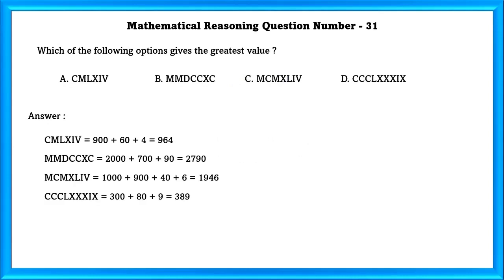Mathematical reasoning question number 31: Which of the following options gives the greatest value? The greatest value is option B.